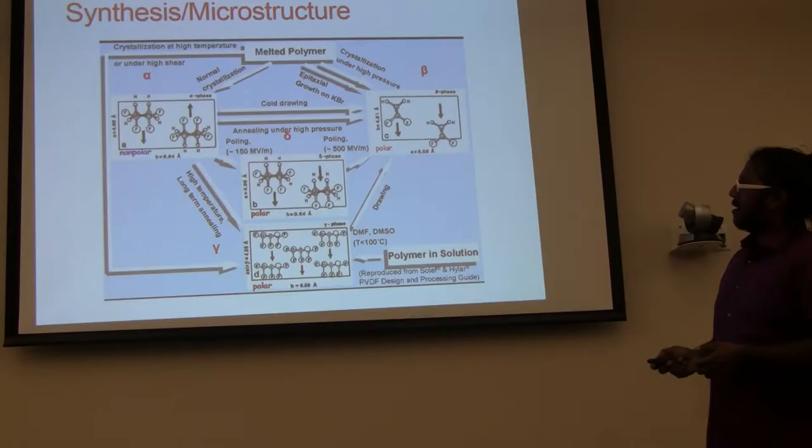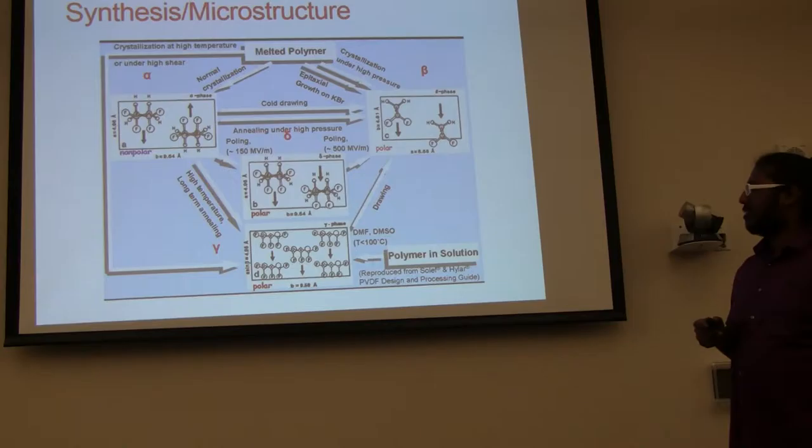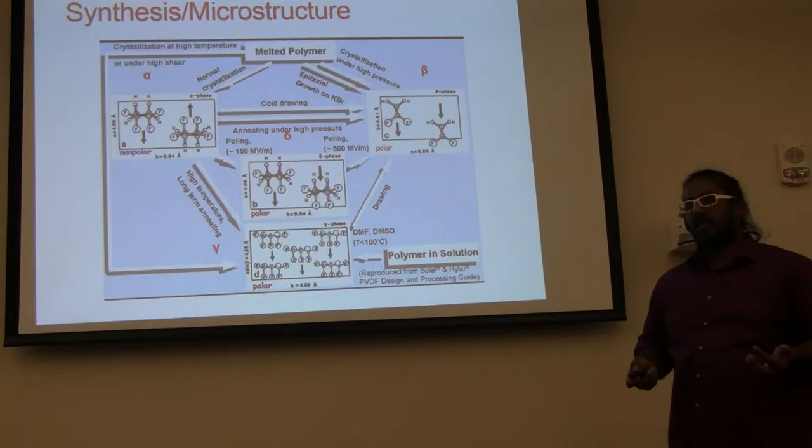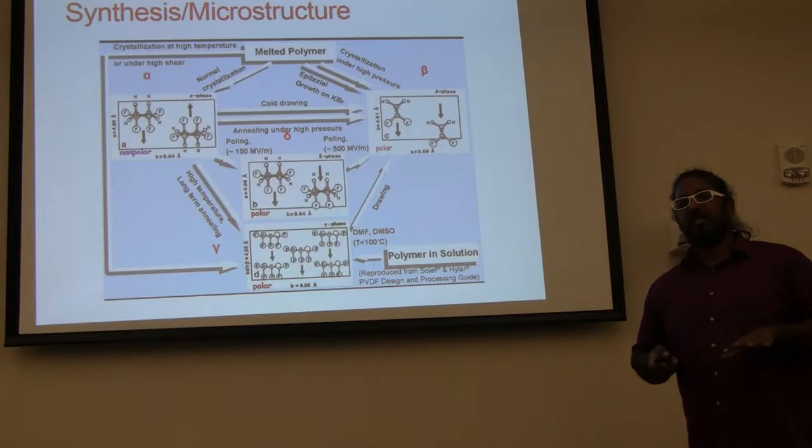But before we get into how we make thin films, we can talk about how we make thick films. For this, they usually melt the plastic and then we stretch it. If you don't stretch it, you get the alpha phase, which is not ferroelectric. If you stretch it, we can get the beta phase, which is ferroelectric. But this route is not going to work for thin films.